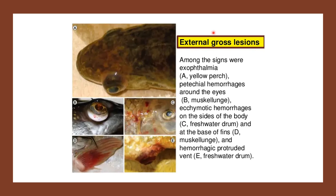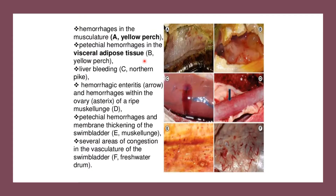External gross lesions include exophthalmia, ecchymotic hemorrhages on the sides of the body, base of the fins, and vent. Other examples include hemorrhages in the musculature, petechial hemorrhages, liver bleeding, hemorrhagic enteritis, membrane thickening of the swim bladder, and areas of congestion in the vasculature of the swim bladder.